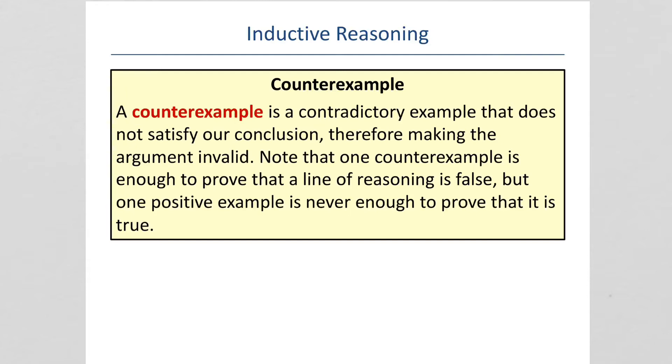A counterexample is a contradictory example that does not satisfy our conclusion, therefore making the argument invalid. Note that one counterexample is enough to prove that a line of reasoning is false, but one positive example is never enough to prove that it's true. So you can prove something is false by counterexample, but just because it works once doesn't mean it's going to work all the time. But if it doesn't work once, then that means you can't say it's true.